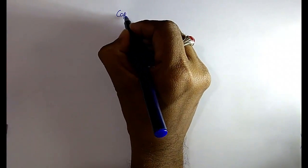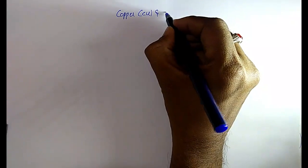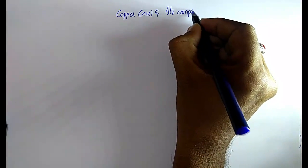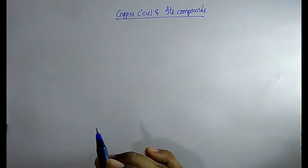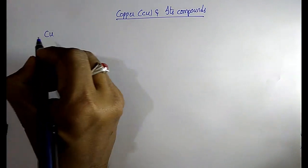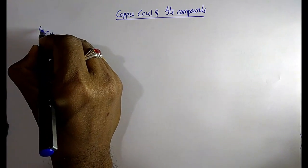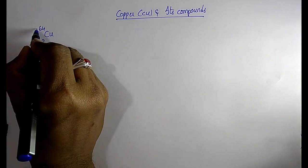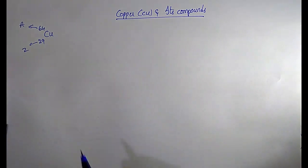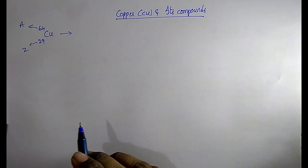The next important metal is copper and its compounds. The atomic number of copper is 29 and mass number is 64.